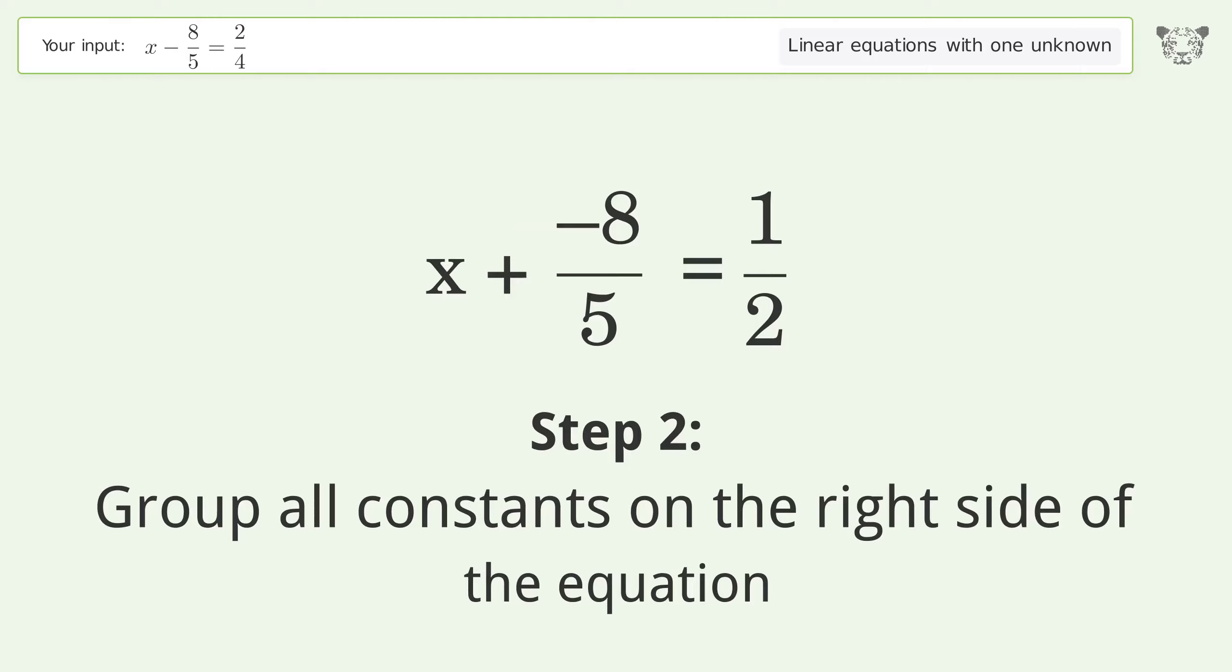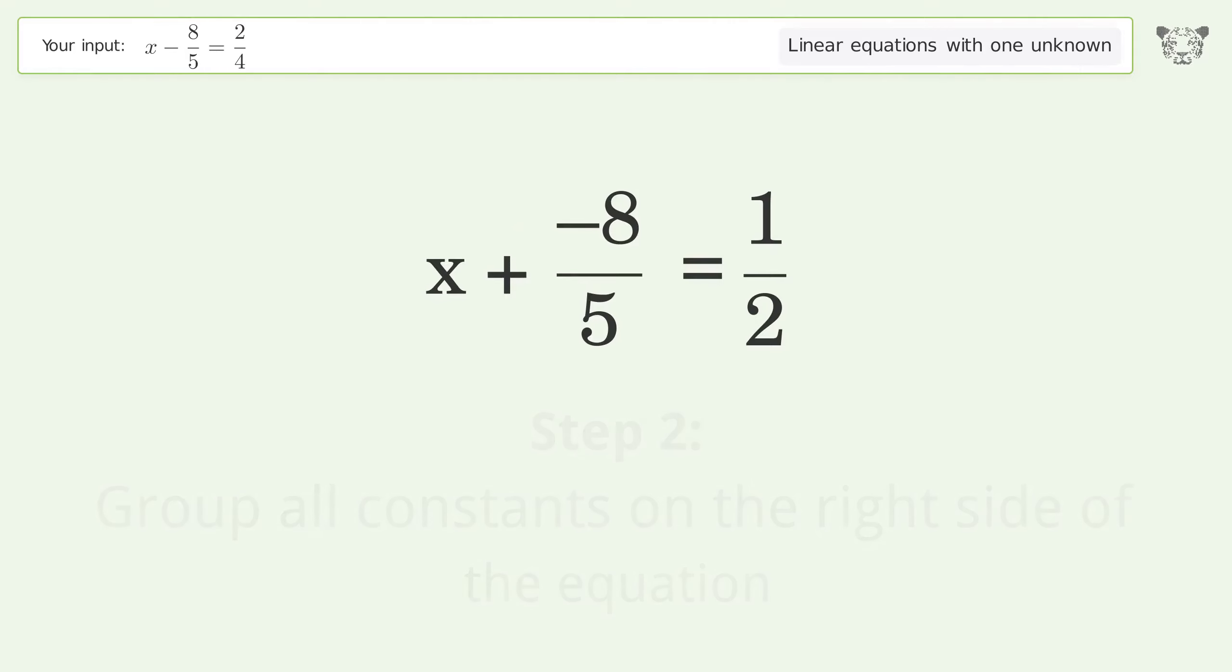Group all constants on the right side of the equation. Add 8 over 5 to both sides.